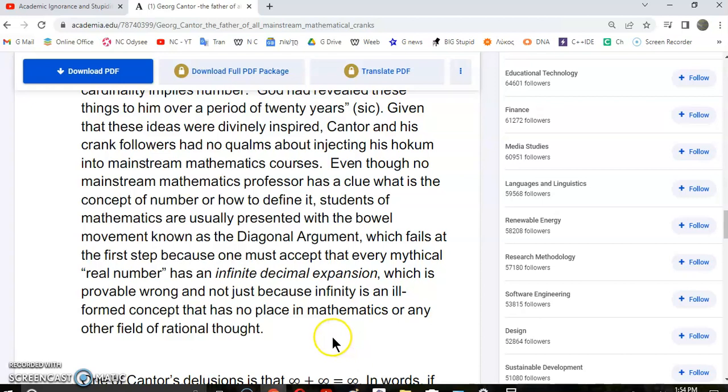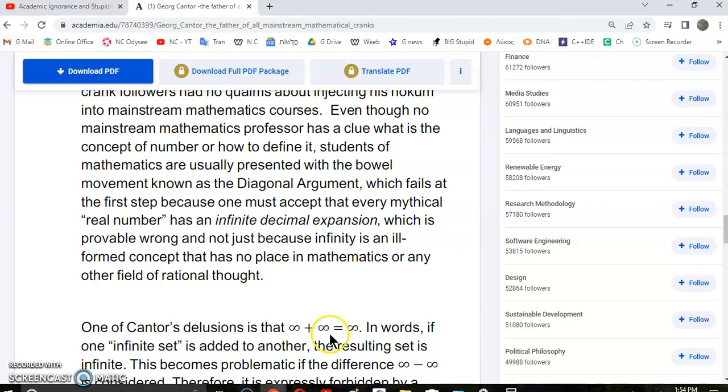Given these divinely inspired ideas, Cantor and his followers had no qualms about injecting his hokum into mainstream mathematics courses, even though no mainstream mathematics professor has a clue what is the concept of number or how to define it. Students of mathematics are usually presented with the diagonal argument. It's actually a misargument and it fails at the first step because one must accept that every mythical object known as a real number has an infinite decimal expansion, which is provably wrong, not just because infinity is an ill-formed concept that has no place in mathematics or any other field of rational thought.